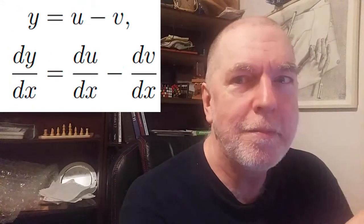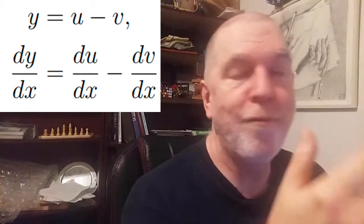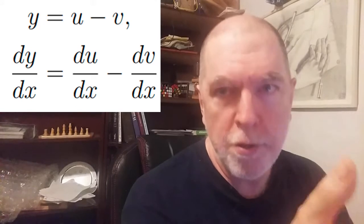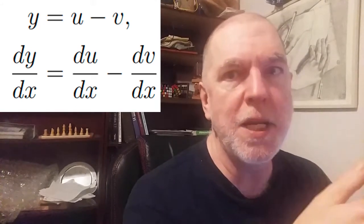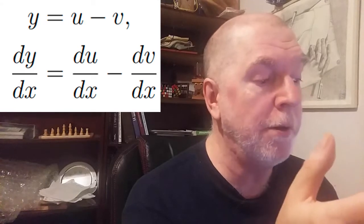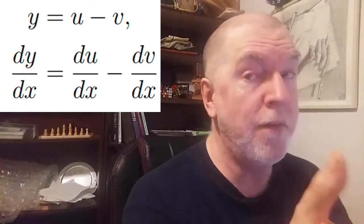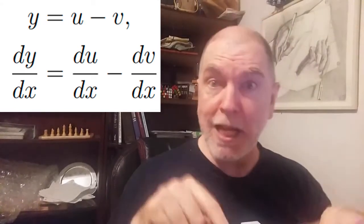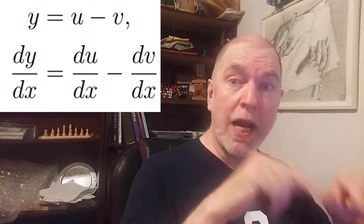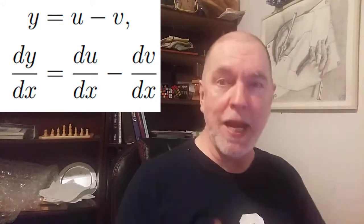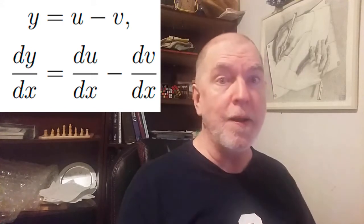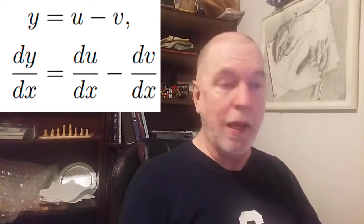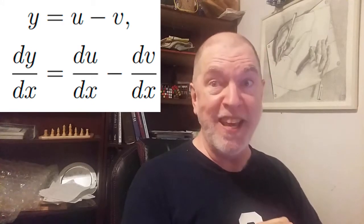And subtraction really isn't different. If we have y equals u minus v, we're going to end up with dy by dx equals du by dx minus dv by dx. Because we can think of that as y equals u plus negative 1 times v, and then the negative 1 is a constant that we keep in that derivative of v.